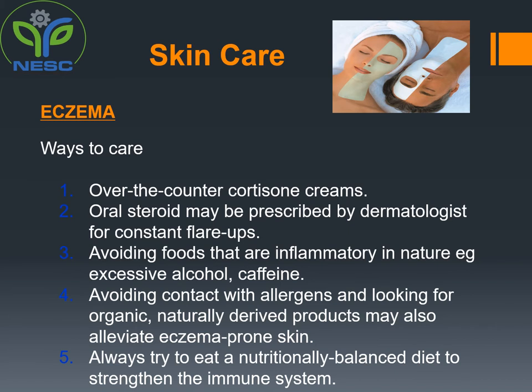Ways to care for eczema: number one, over-the-counter cortisone creams. Number two, oral steroids may be prescribed by dermatologists for constant flare-ups. Number three, avoid foods that are inflammatory in nature — for example excessive alcohol and caffeine. Number four, avoid contact with allergens and look for organic, naturally derived products, which may also alleviate eczema-prone skin. Number five, always try to eat a nutritionally balanced diet to strengthen the immune system.